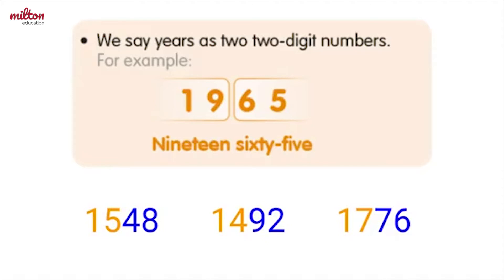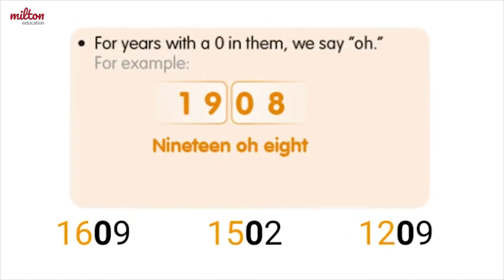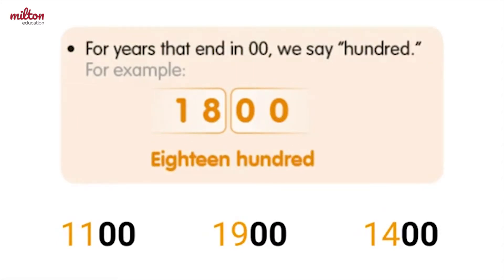Things get a little more complicated when we add zeros into the years. For years with one zero, we say 'oh', like in 1908, 1609, 1502, or 1209. Now if we have two zeros in a year, we say 'hundred', like eighteen hundred, eleven hundred, nineteen hundred, or fourteen hundred.